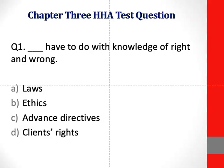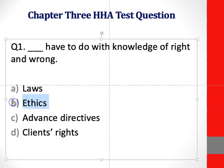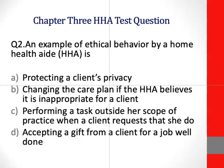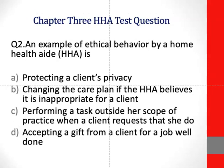This question is asking about what has to do with knowledge of right and wrong. We spoke about ethics — ethics is the laws that govern ethical behaviors and things that are right from wrong. So B is the correct answer for this question.